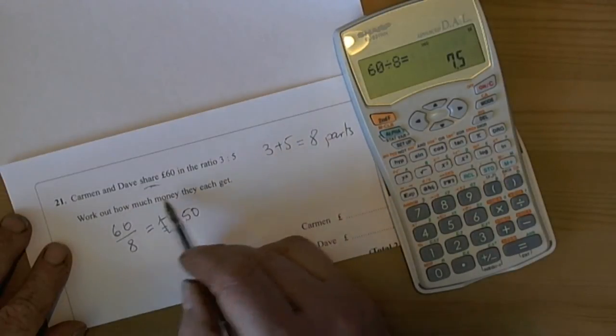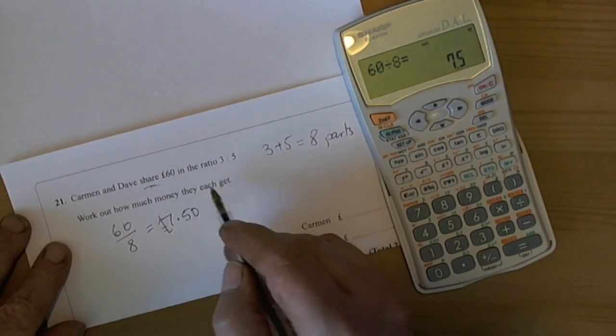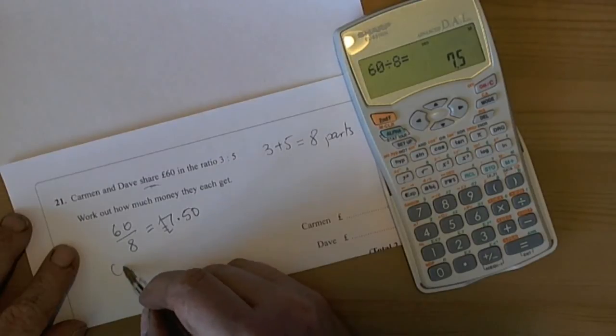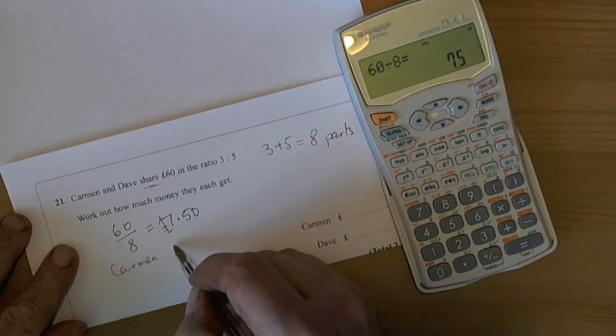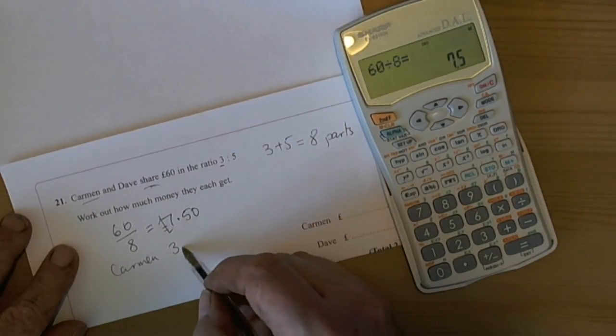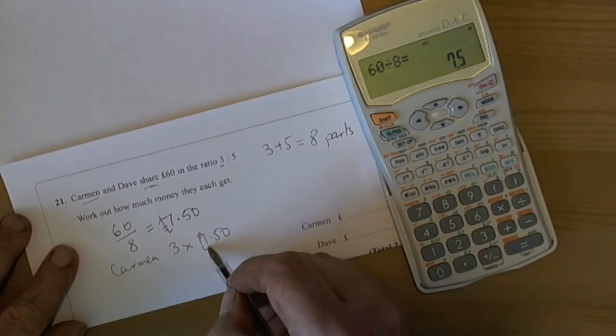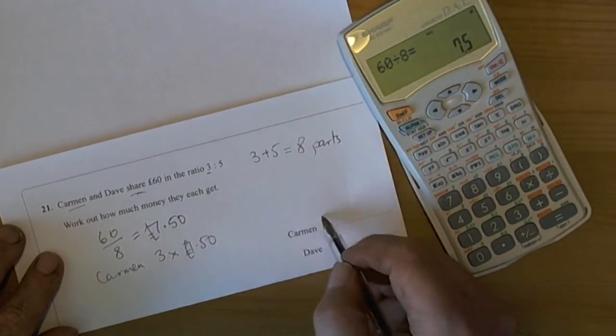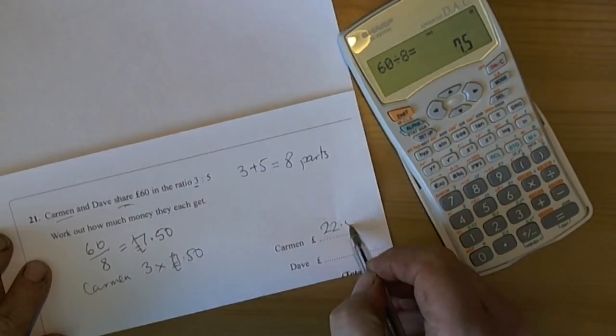And it wants you to work out how much they each get. So Carmen is 3 parts. She's at the beginning and the beginning ratio was 3. So 3 times the 7 pound 50. So on your calculators you'll get an answer of 22 pounds 50.